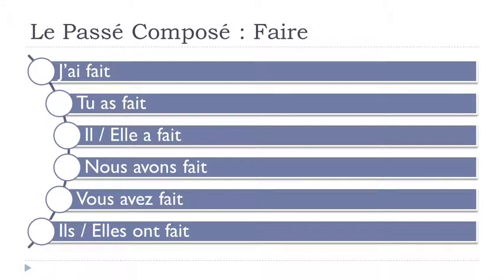Alright, so to make it clear one more time — remember that in most cases for the passé composé, you will have to use avoir at the present form, followed by the participe passé form. So if you're not sure how to construct that, check unité 5 and you will see the lesson that explains everything.